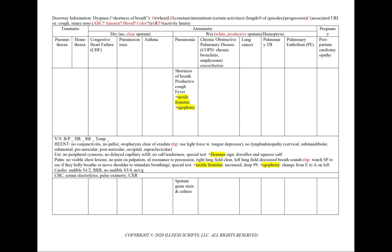In pneumonia, our supporting points will include shortness of breath, a productive cough, a new fever, and as we'll see in our physical exam, the special tests of positive tactile fremitus and egophony. We'll order a sputum gram stain and culture.